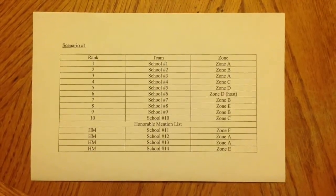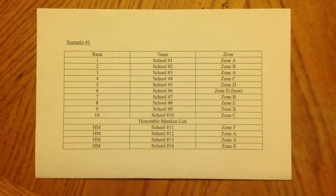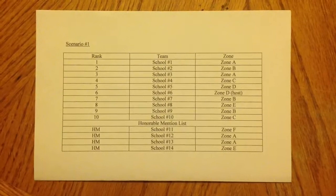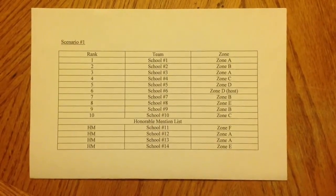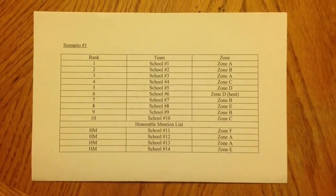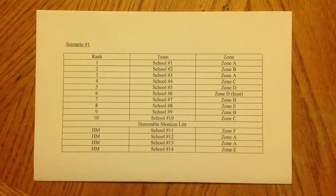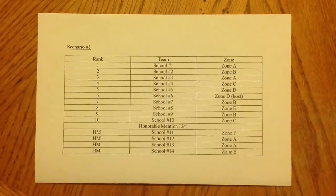Just to clarify, currently at Provincials there are eight zone reps, one host, and three wildcards. I'm not proposing we change that setup, but what I am proposing is how we give out those three wildcards.